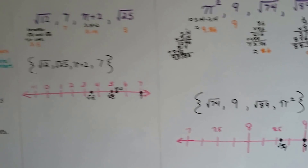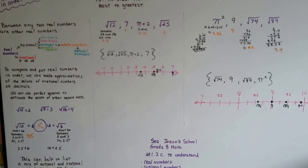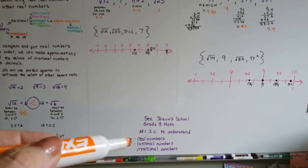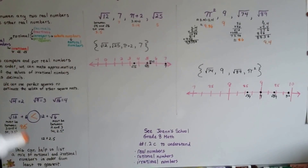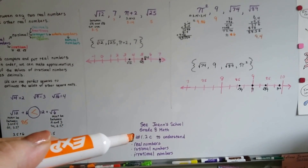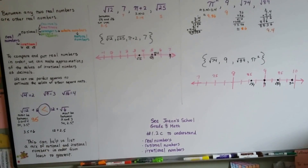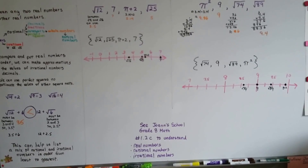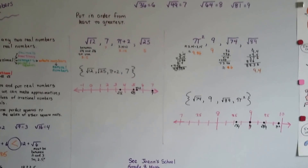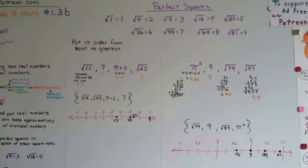So that's putting real numbers in order — rational and irrational numbers mixed together. That's not that hard! If you're confused about what rational and irrational numbers are, go back to the Grade 8 math playlist and watch video 1.2c or 1.2b — it'll explain rational and irrational numbers, integers, fractions, decimals, and all of that. Our next video is going to be on exponents. See you there — bye!